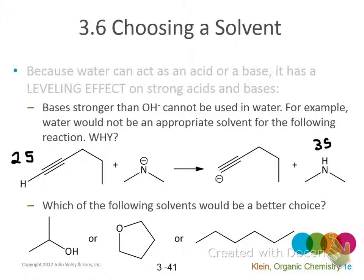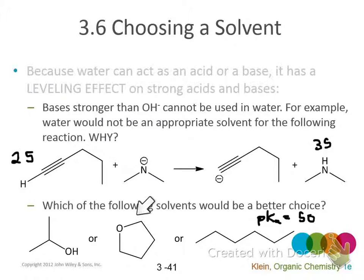If you remember alkanes, the pKa's are like 50 - hydrogens don't want to come off of those. And the ether - this hydrogen is the most acidic one and it's probably between 40 and 50, because there's no resonance. It has an inductive effect because of the oxygen, but the pKa is going to be really high.